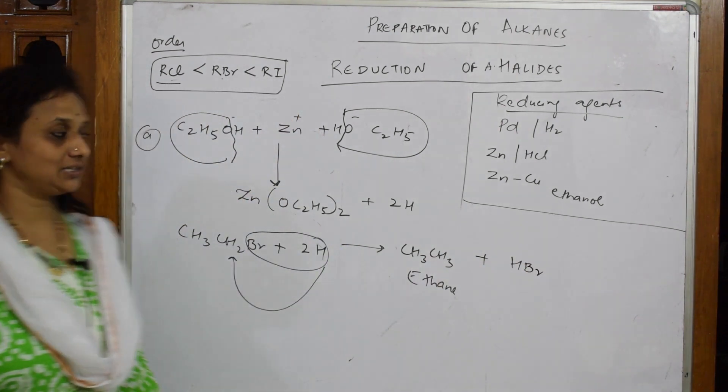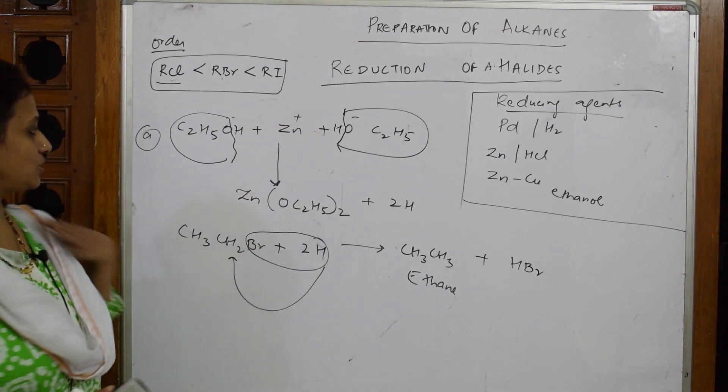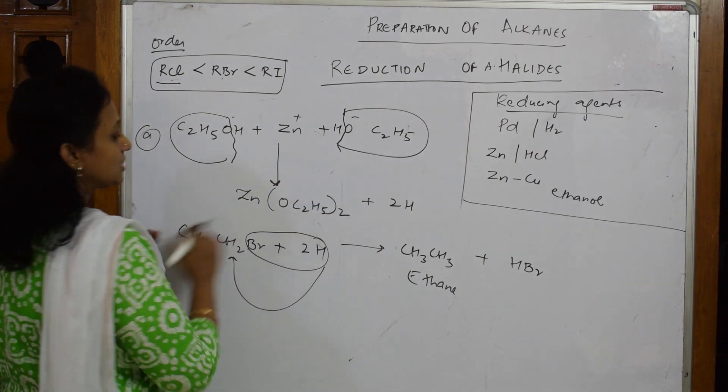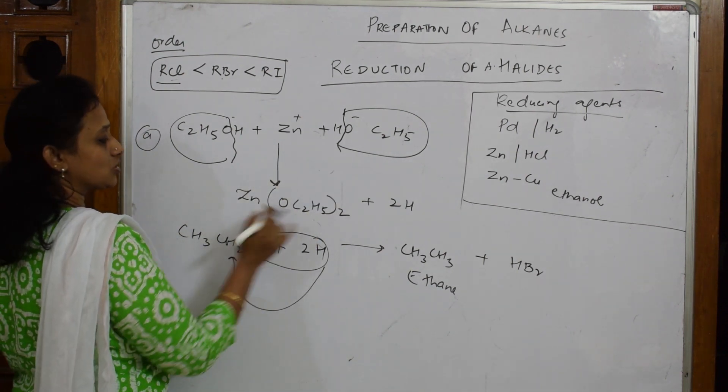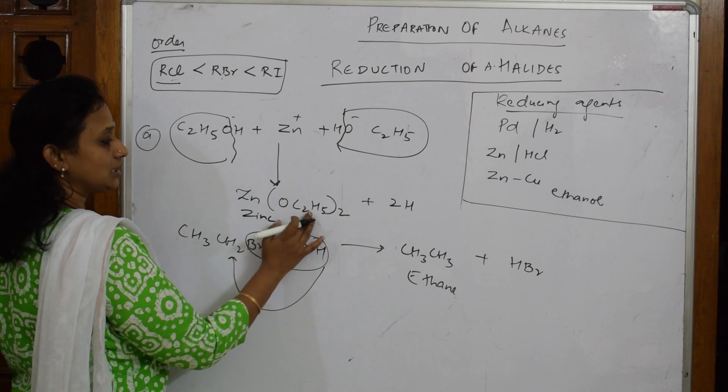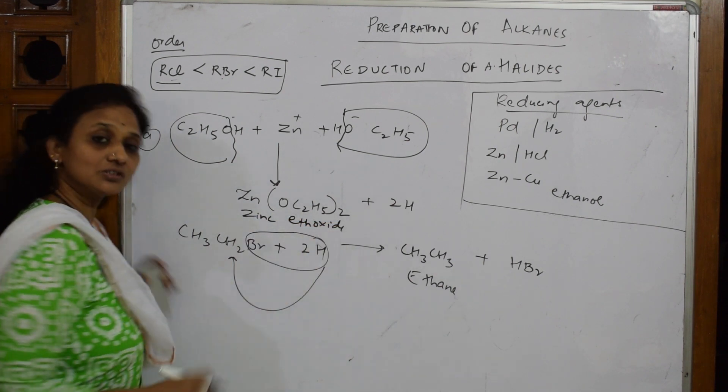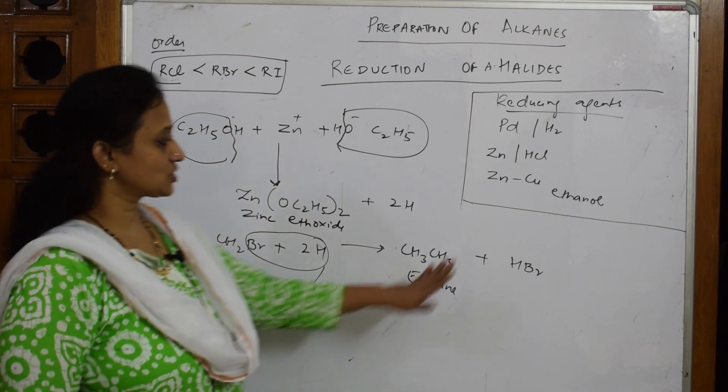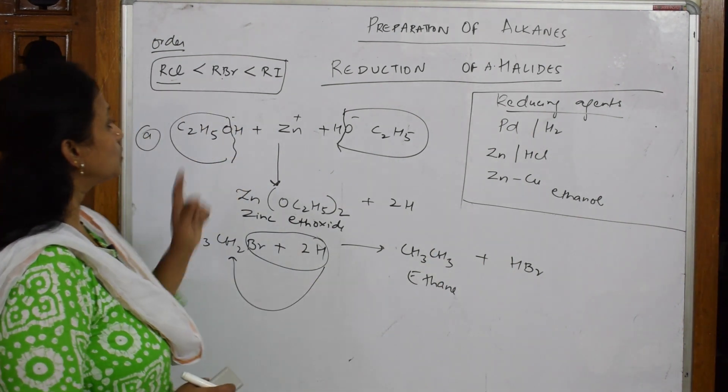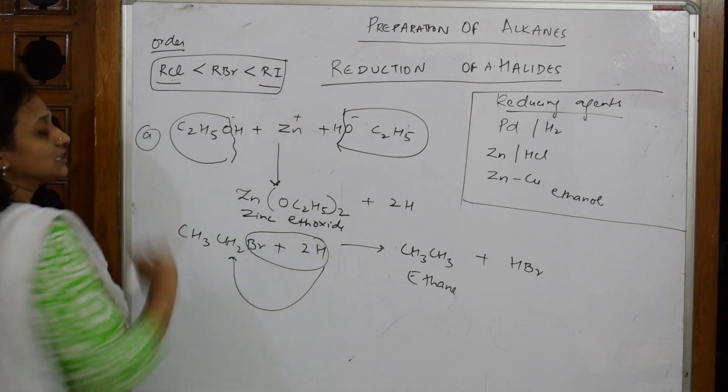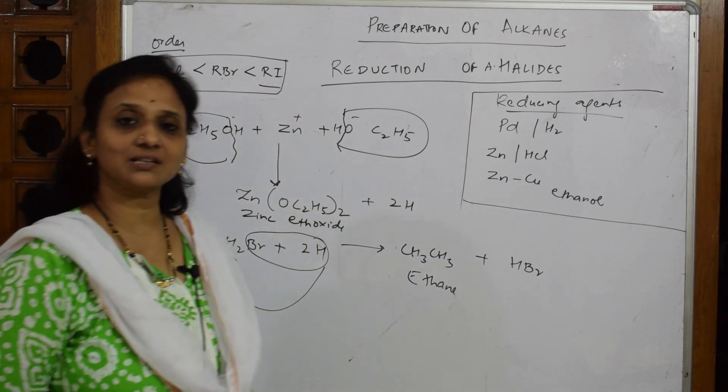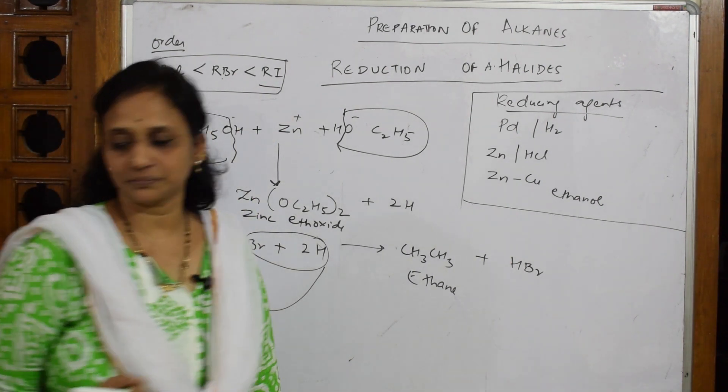What is this compound called? This is called zinc ethoxide, Zn(OC₂H₅)₂. And this is your required alkane. Simple, isn't it? Now we will do one question based on iodine - a very famous question for this particular thing. That question will be doing in retention.